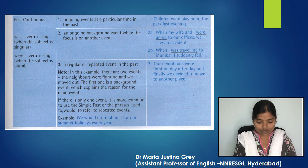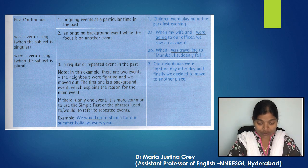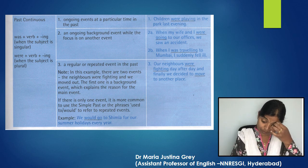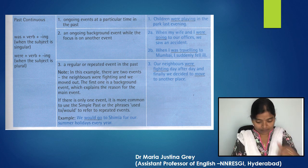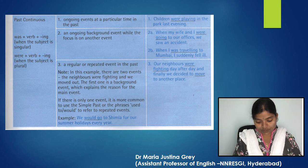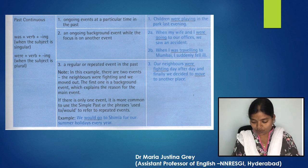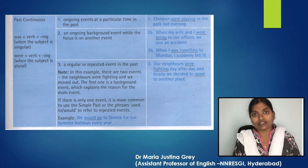Let's move on to past continuous. To form a sentence with past continuous, we need 'was' plus verb plus '-ing' when the subject is singular. But when the subject is plural, we use 'were' plus verb plus '-ing.' Past continuous is used to talk about ongoing events at a particular time in the past. For example, 'Children were playing in the park last evening.' It is also used to talk about an ongoing background event while the focus is on another event. For example, 'When my wife and I were going to our offices, we saw an accident,' or 'When I was travelling to Mumbai, I suddenly fell ill.'